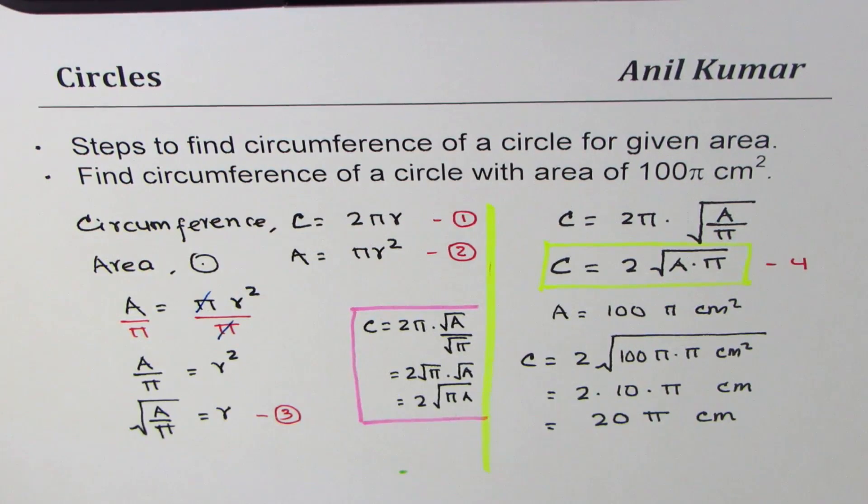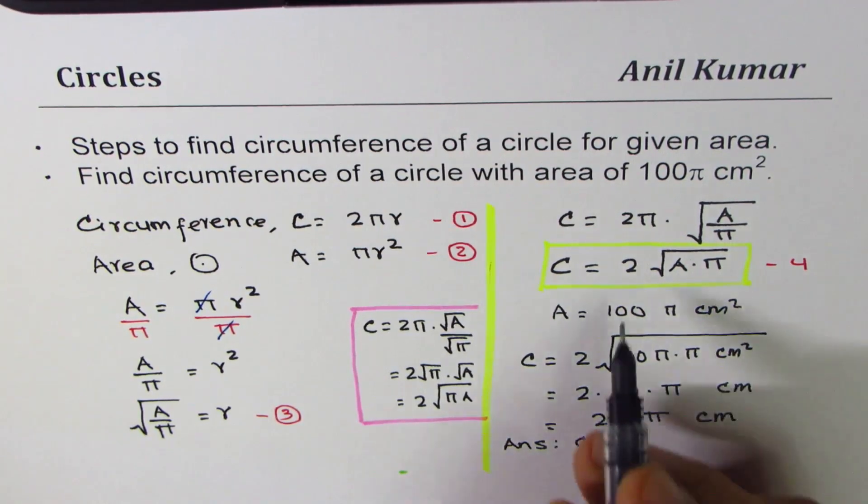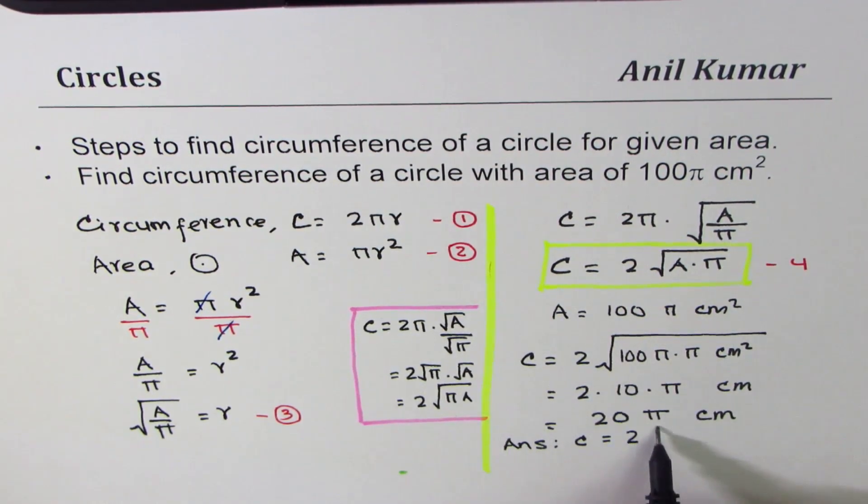So that is the answer for the second part, right? So we can say answer: circumference is equal to 2 square root πA is better to write in front of A, since that's a constant value, which is 20π centimeters, right? So I hope that shows clearly the steps relating circumference and area.